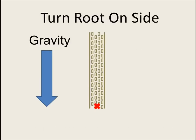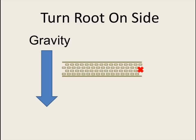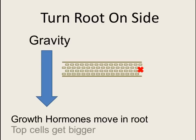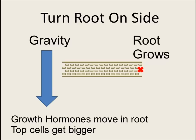If you turn the root on its side, the growth hormones move in the root tip — the part where the root grows. The top cells in that root tip get bigger, and the root grows like this.